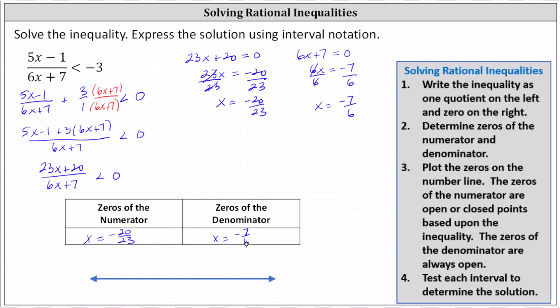Step three: we now plot the zeros on the number line. The zeros of the numerator are either open or closed points based upon the inequality symbol, while the zeros of the denominator are always open points. Notice negative 20 twenty-thirds is greater than negative one, and negative seven sixths is less than negative one, so we plot negative seven sixths on the left as an open point. For the zero of the numerator, the fraction equals zero, and zero less than zero is false, which means it is also an open point.